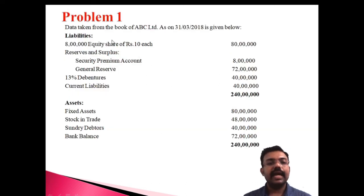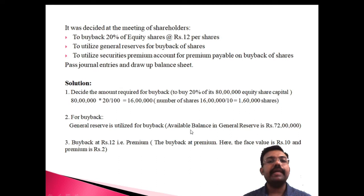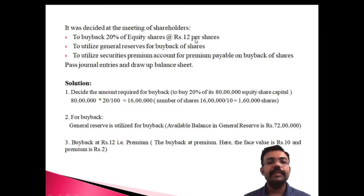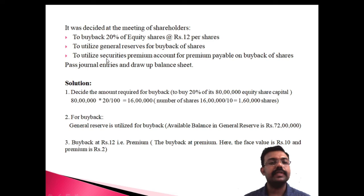This is the balance sheet of ABC Limited. The company is going for buyback of 20% of the equity shares at rupees 12 per share. They are utilizing general reserve for the buyback and security premium account for the premium.